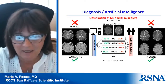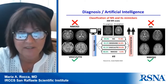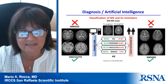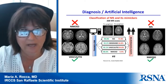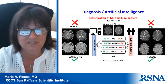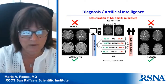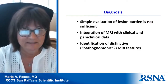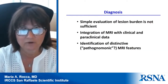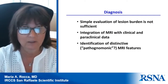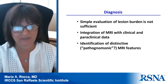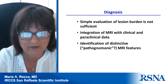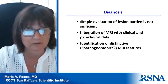The automatic algorithm outperformed the two expert neuroradiologists for all these different conditions. However, there were different cases of misclassification also from the automated algorithm. This is important since we are dealing with patients at the beginning of a disease where we need to make a diagnosis and treatment decisions. For diagnosis, it's clear that the simple evaluation of lesion burden, lesion number, and lesion volume is not sufficient — we need to integrate MRI findings with clinical and paraclinical data. We might also be able to identify distinctive MR features that could be considered pathognomonic of a given condition.